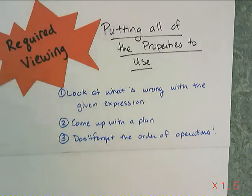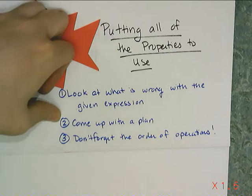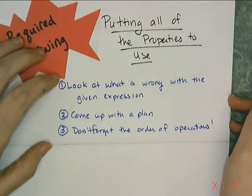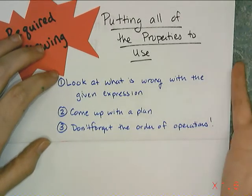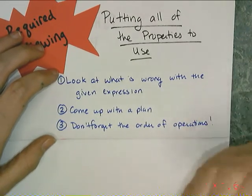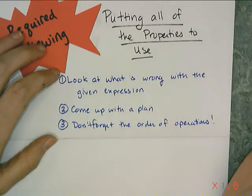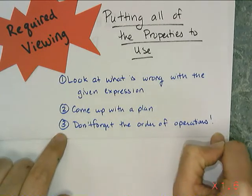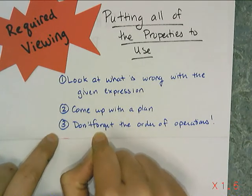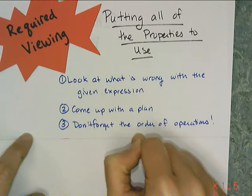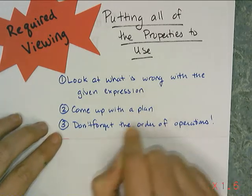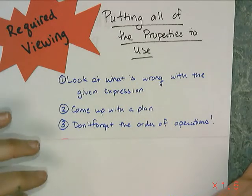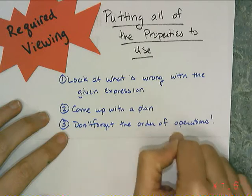You don't have to write them down — just come up with them in your head. Then come up with a plan: which one of those things are you going to take care of first? Are you going to get rid of all the parentheses first? Are you going to combine like terms first? Once you have your plan, execute it — do the distributions, combine like terms, and do whatever you need to do. But don't forget the order of operations, because those are always in play. You don't violate the order of operations, and the only way to work around them is the distributive property. Everything else, you've got to keep the order of operations in mind.